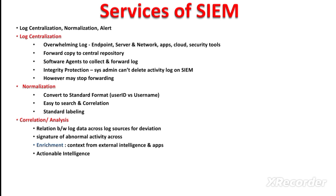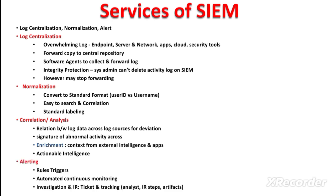All this information is converted into actionable intelligence by the SIEM solution. The final service is alerting — in correlation and analysis, different correlation rules are built, and once these rules get triggered due to any offense, these offenses are made available and seen by the security administrator on the SIEM console. This represents a kind of automated continuous monitoring by a SIEM solution.